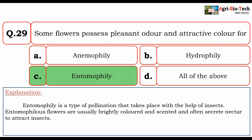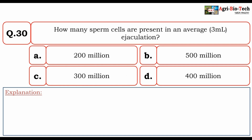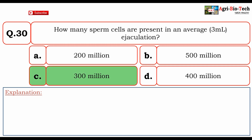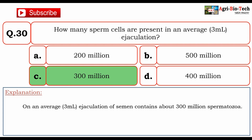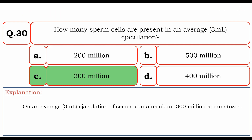The last question: How many sperm cells are present in an average 3 ml ejaculation? Options: A. 200 million, B. 500 million, C. 300 million, D. 400 million. The correct answer is C. 300 million. On average, a 3 ml ejaculation of semen contains about 300 million spermatozoa.